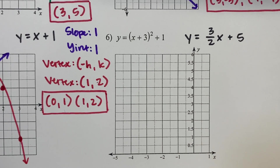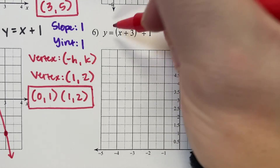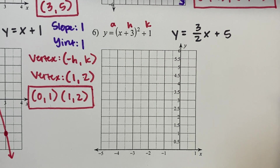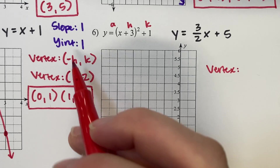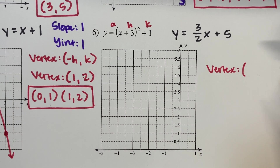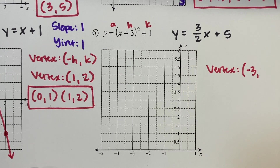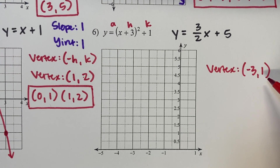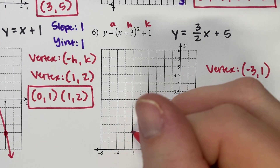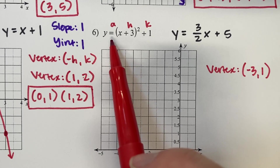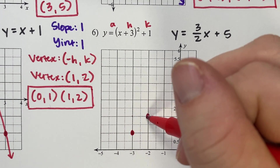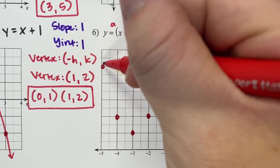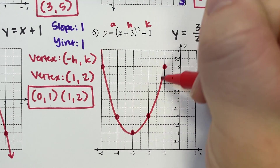Let's do that one more time. Again, this is in vertex form. We have a — which is just the invisible positive 1 this time — h inside the parentheses, and k on the end. Remember to change the sign on h but keep k the same. Our h is positive 3, which changes to negative 3. K is 1 and stays the same. So the vertex is negative 3, 1. Since a is positive, it goes up 1 over 1, then up 3 over 1, same on both sides. Connect those points — there's our parabola.